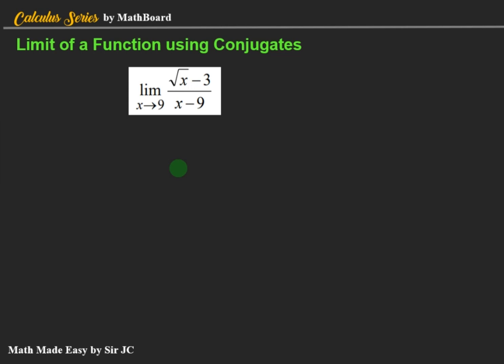When we want to remove the radical sign in the numerator, that's what we call rationalizing the numerator. If the radical sign is in the denominator and we want to remove it, that's what we call rationalizing the denominator.